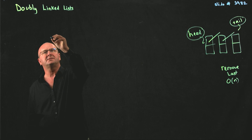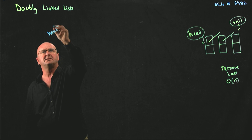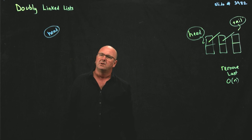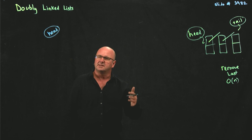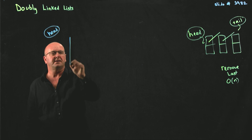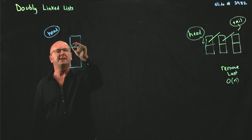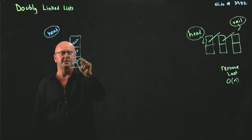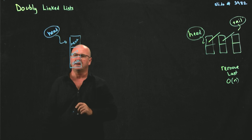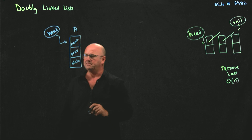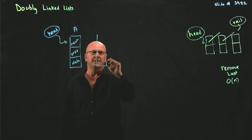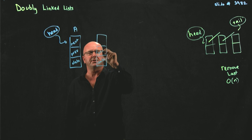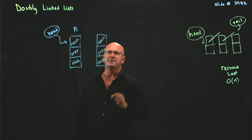A solution to that is to use a doubly linked list. A doubly linked list is just like a singly linked list, except in our node class, instead of just having data and next, in our doubly linked list we have next, previous, and data. Our head element points to our first node, and subsequent nodes also have next, previous, and data.